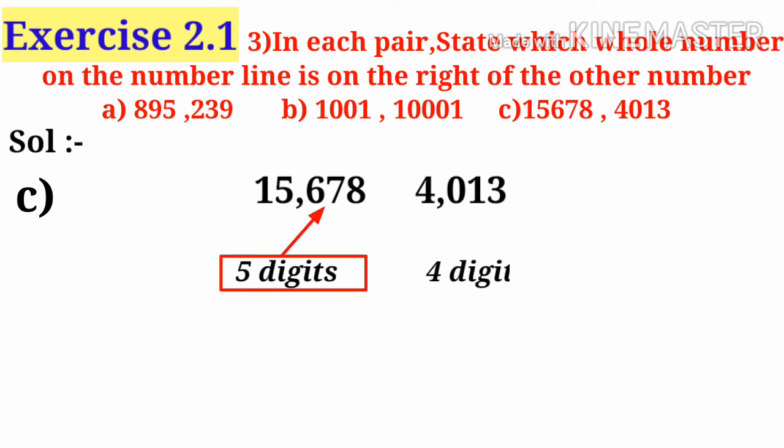Next, number c: 15,678 has 5 digits, 4,013 has 4 digits.